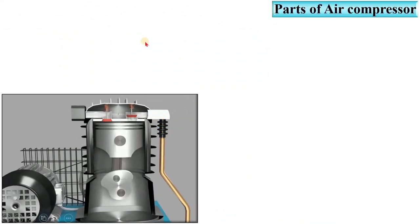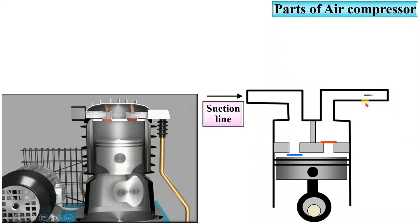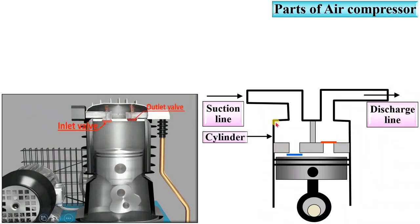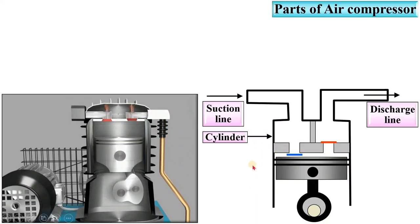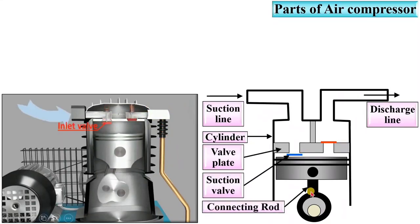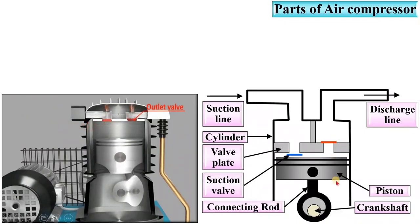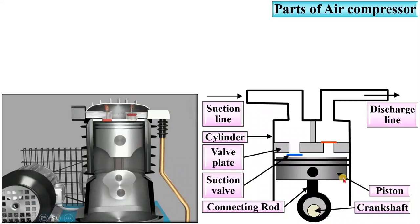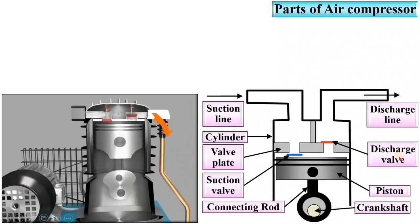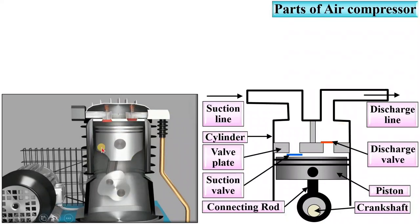Next, parts of air compressor. This is a very simple diagram — you can draw the same diagram in the examination. Here is the suction line and this one is the discharge line. This one is the cylinder where the air is compressed. This one is the valve plate and here you can see the suction valve. This one is the connecting rod, and this one is the crankshaft. This is the animation used to understand the working of the air compressor.